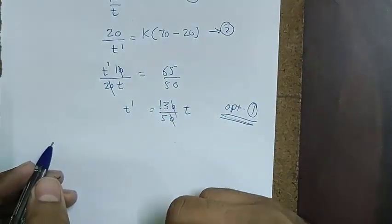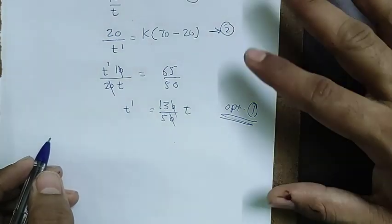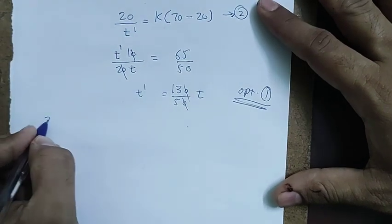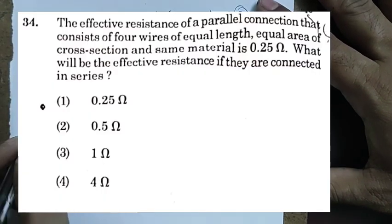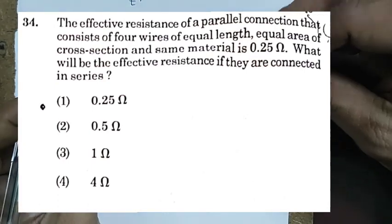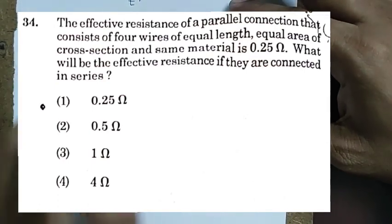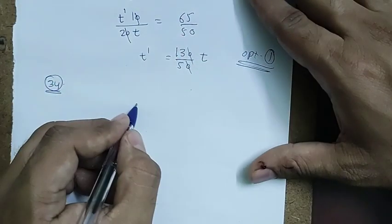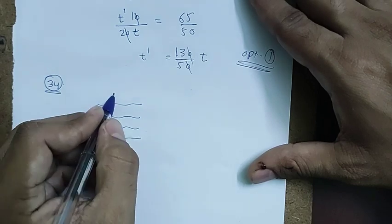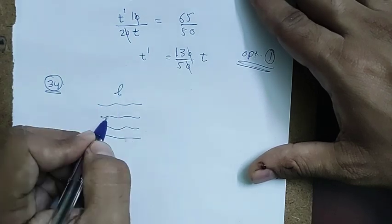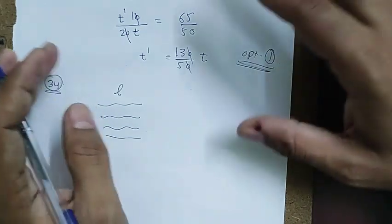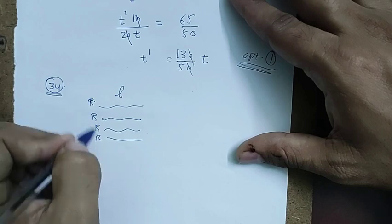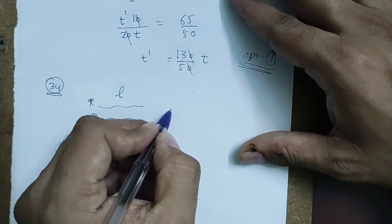Question 34 is from current electricity. It involves four wires, all with the same length, same material, and same cross-sectional area.